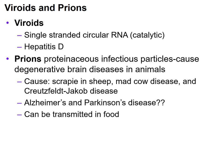Prions are proteinaceous infectious particles. They generally cause brain or nervous system degenerative diseases in animals. Some examples are scrapie in sheep, mad cow disease, and Creutzfeldt-Jakob disease. It's thought that prions can also cause Alzheimer's and Parkinson's disease. Prions can be transmitted in food — if they infect sheep or cows, they can be transmitted to humans.